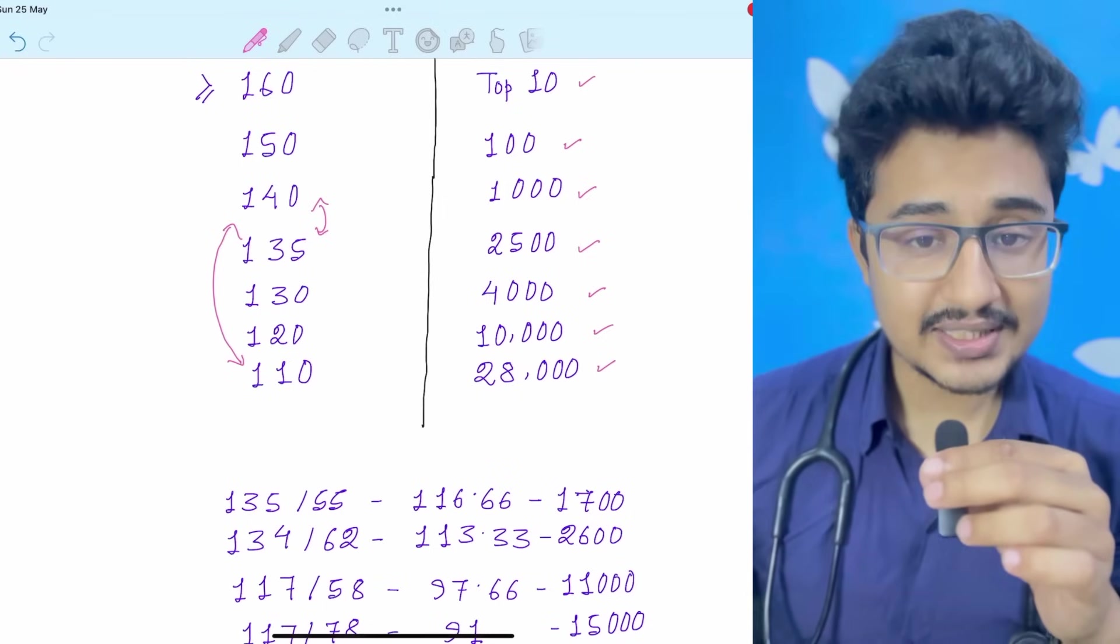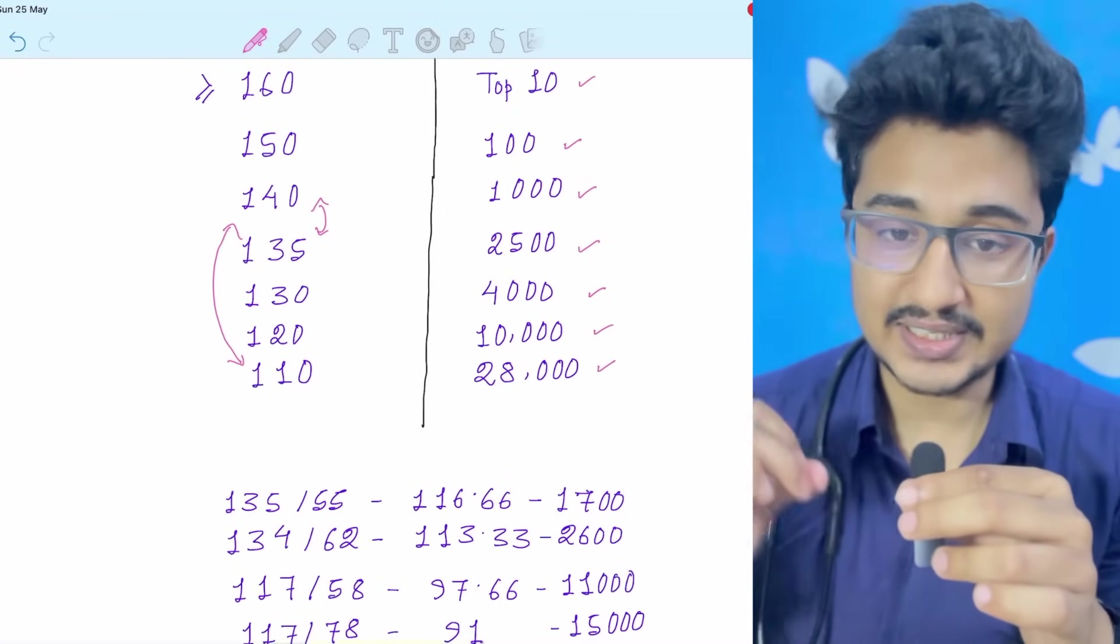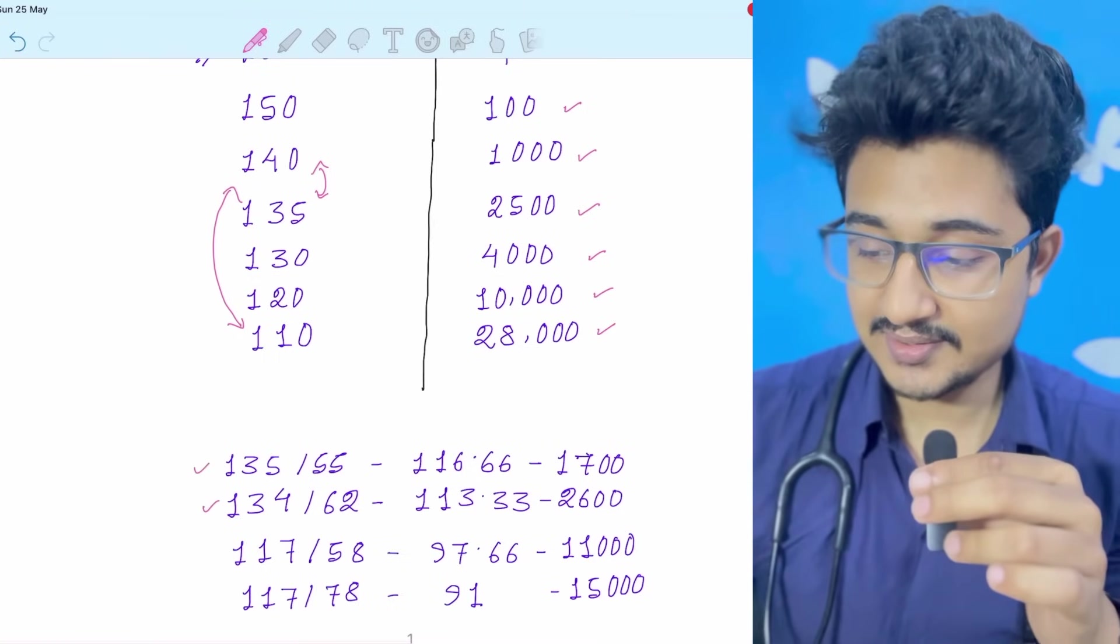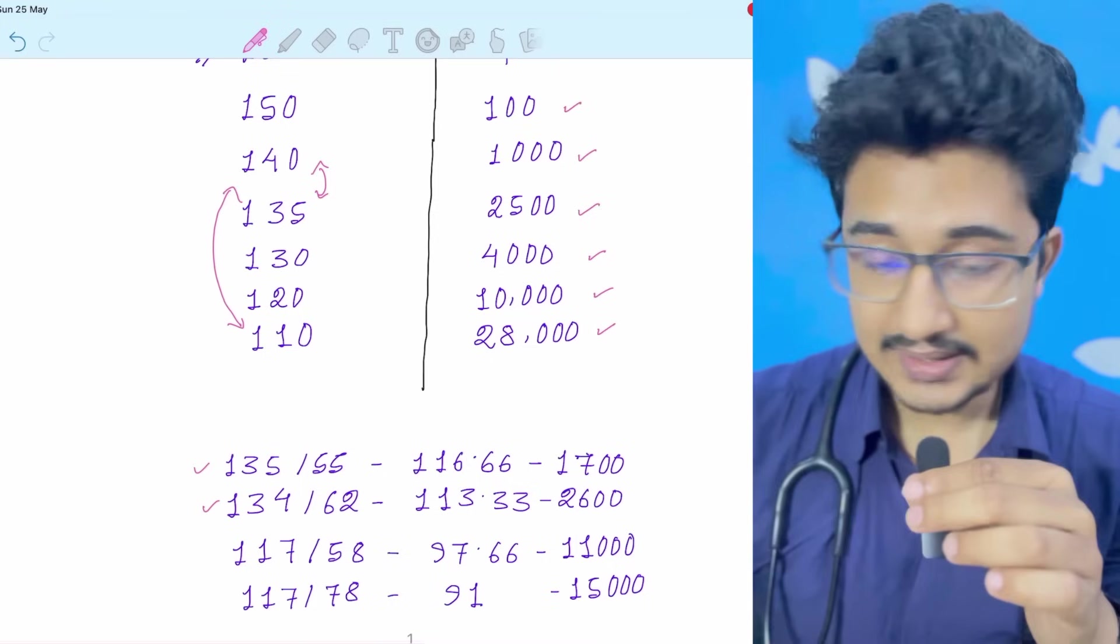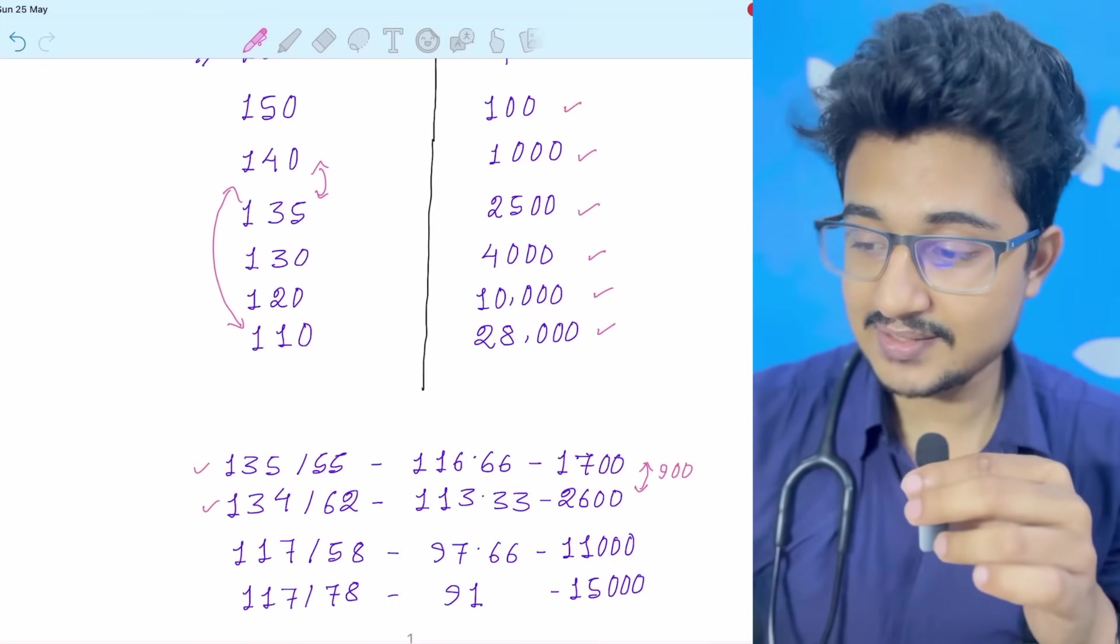See, not only the number of corrects matter, but in INICT the number of incorrect matters. In 135 corrects and 134 corrects, only one correct difference, but in this high ranking setup also there is 900 rank difference.